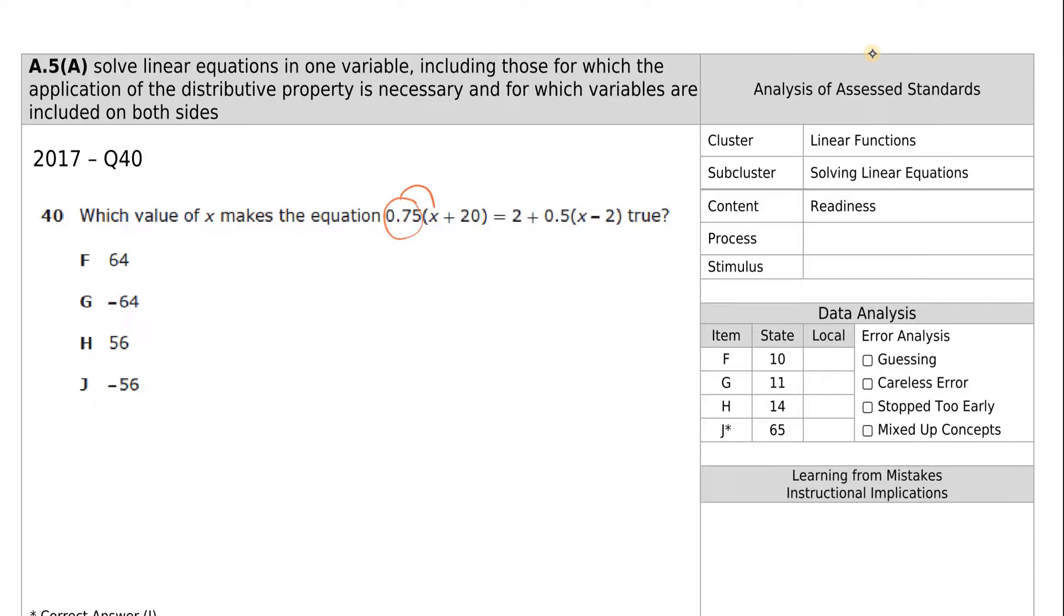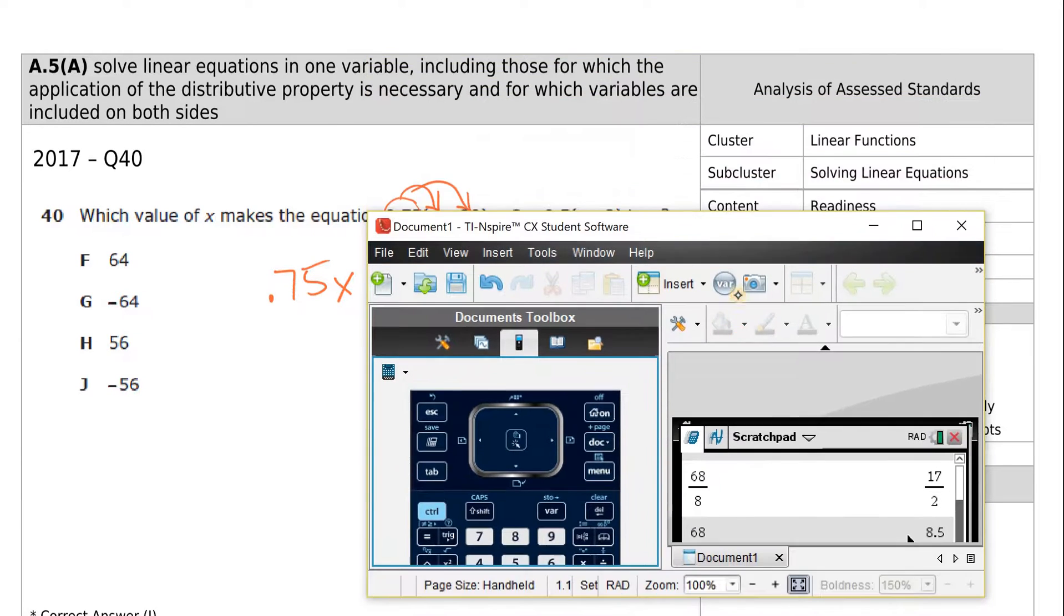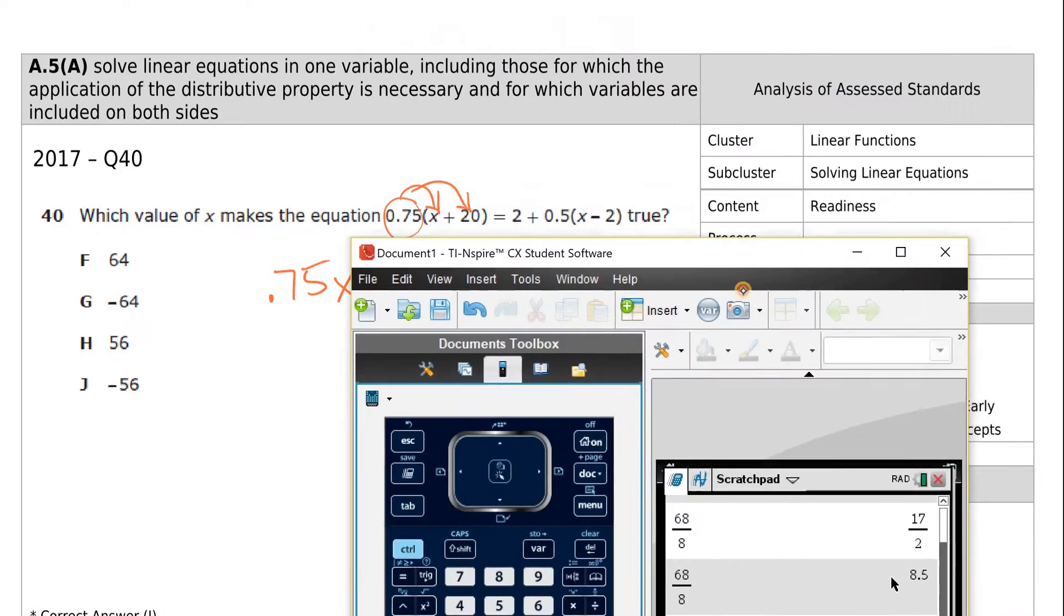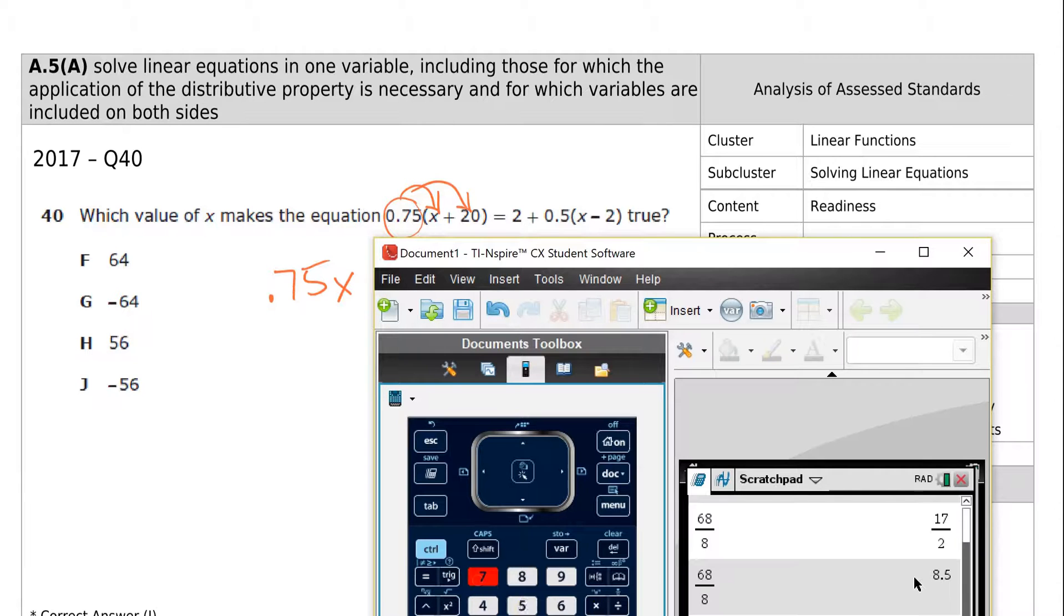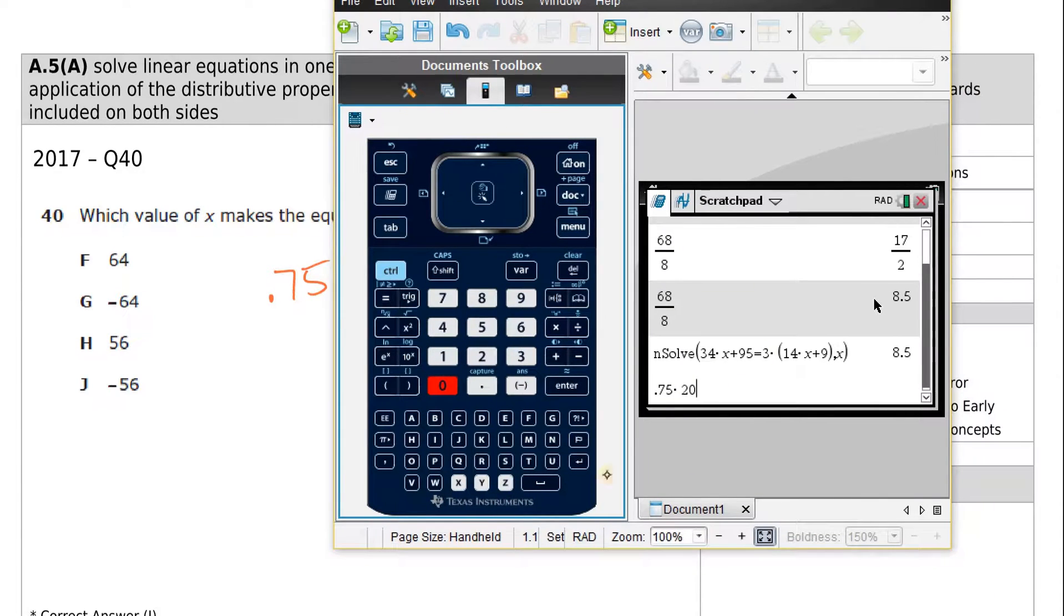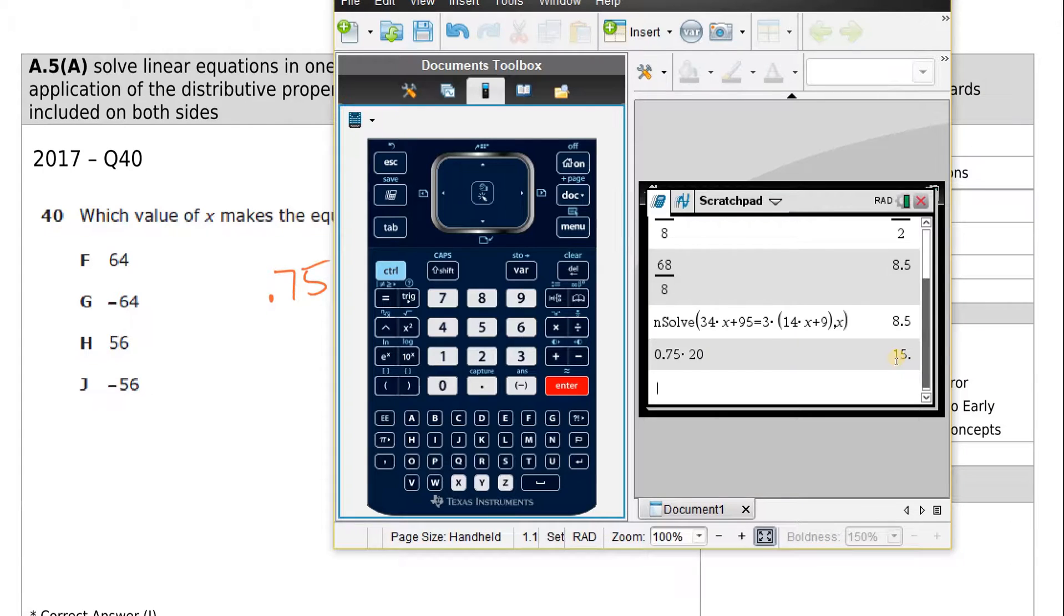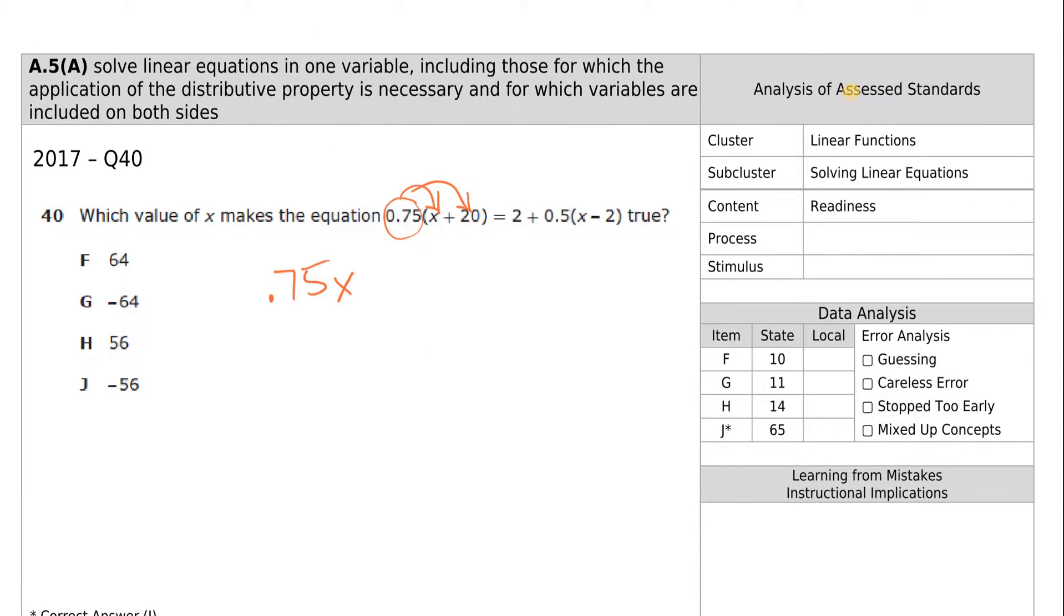For this question, 0.75 times x, 0.75 times 20. 0.75 times x is just 0.75x. For 0.75 times 20, those of you who are bad at decimals, you can type this into your calculator. We get 15. That makes sense, because those of you who are good at fractions know that 0.75 is asking for 3 fourths, so 3 fourths of 20 is 15. That's one of the many ways in which knowing your fractions helps you.